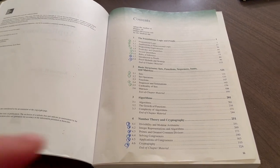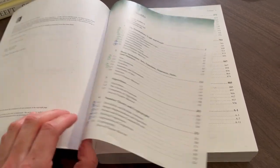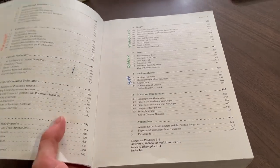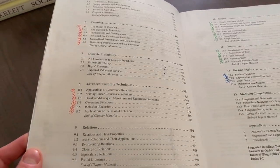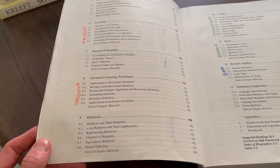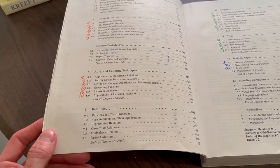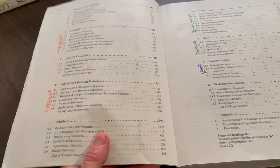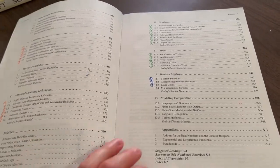Then the textbook gets into set theory, algorithms, number theory, and cryptography, induction, combinatorics, namely how many permutations or combinations, how many ways can you arrange something and so forth, discrete probability, relations, graphs, trees, Boolean algebra, and more.